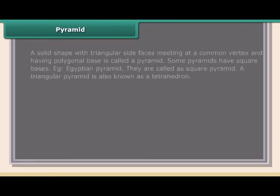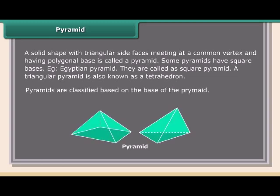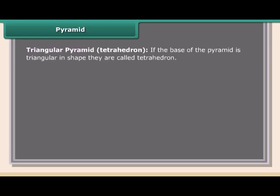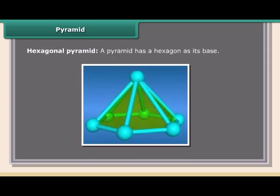A pyramid is a solid shape with triangular side faces meeting at a common vertex and having a polygonal base. Some pyramids have square bases, such as the Egyptian pyramid — these are called square pyramids. A triangular pyramid is also known as a tetrahedron. Pyramids are classified based on their base: triangular pyramid (tetrahedron), square pyramid, and hexagonal pyramid.